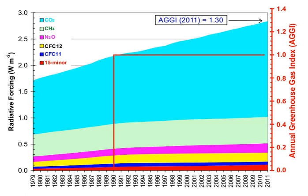The proportion of an emission remaining in the atmosphere after a specified time is the airborne fraction. The annual airborne fraction is the ratio of the atmospheric increase in a given year to that year's total emissions. As of 2006, the annual airborne fraction for CO2 was about 0.45, and increased at a rate of 0.25 ± 0.21% per year over the period 1959–2006.